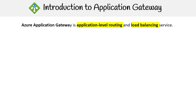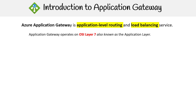Azure has a few different kinds of load balancers, and one in particular is the Application Gateway. This is an application-level routing and load balancing service. Application Gateway operates at OSI layer seven, which is also known as the application layer.